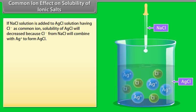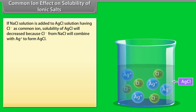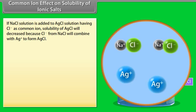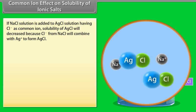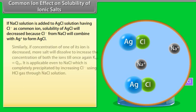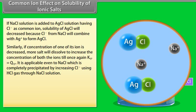Common ion effect on solubility of ionic salts: If NaCl solution is added to AgCl solution, with Cl⁻ as the common ion, the solubility of AgCl will decrease because Cl⁻ from NaCl combines with Ag⁺ to form AgCl. Similarly, if the concentration of one of its ions is decreased, more salt will dissolve to increase the concentration of both ions until Ksp equals Qsp.